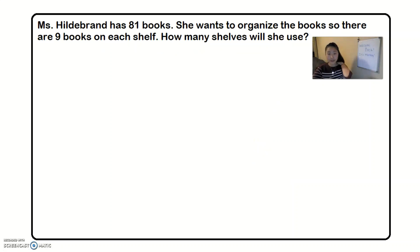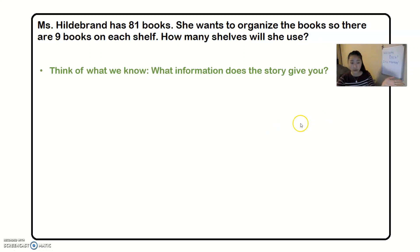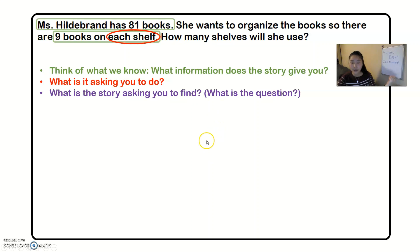So now before you solve, I would like to go over what things we need to know about before you start solving. So let's go over some key details again. Think of what the story gives you and think of what you already know. We're going to go back and highlight those parts that we really needed to know. It was that Ms. Hildebrand has 81 books. Second thing is she wants nine books on each shelf. It's asking you to put nine books on each shelf. And it's asking you how many shelves will she use?